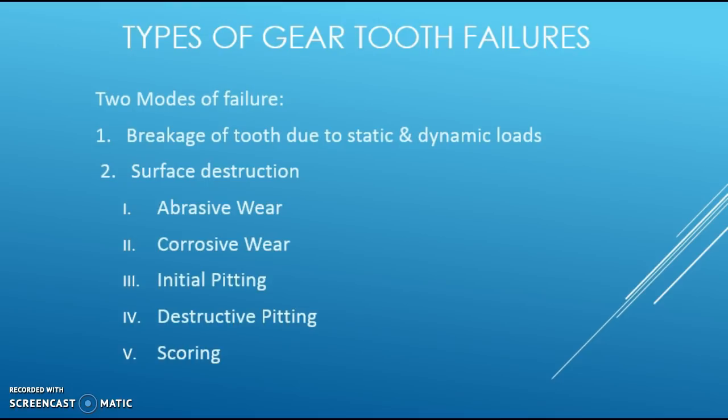There are two basic modes of gear tooth failures. The first one is the breakage of tooth due to bending failure, and the other is surface destruction. Surface destruction is further categorized into abrasive wear, corrosive wear, initial pitting, destructive pitting, and scoring.